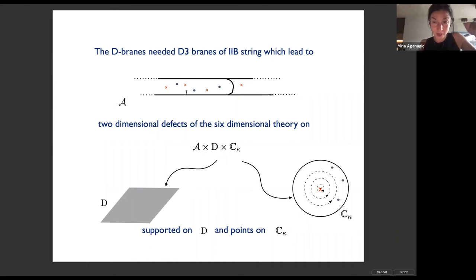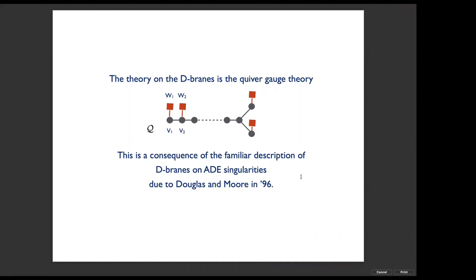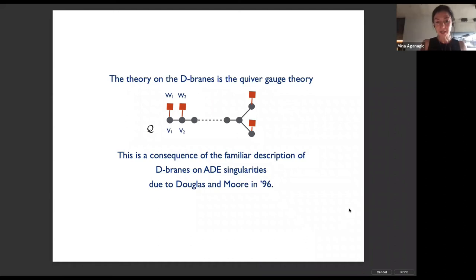From the non-compact D3-branes wrapping non-compact two-cycles in the ADE space, we get vertex operators. The theory on the D-branes is a quiver gauge theory, where the quiver is of type G — the same type as the ADE surface and the little string theory. This is a consequence of the familiar description of D-branes in ADE singularities due to Douglas and Moore in 1996. In particular, branes supported on compact cycles give rise to gauge nodes of the quiver, and branes supported on non-compact cycles give rise to flavor nodes — framing nodes, the red ones.